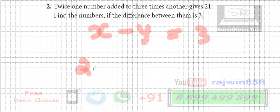Correct, twice the number. So 2x added to, added to means plus. 3 times another, so 3y. This is equal to 21.